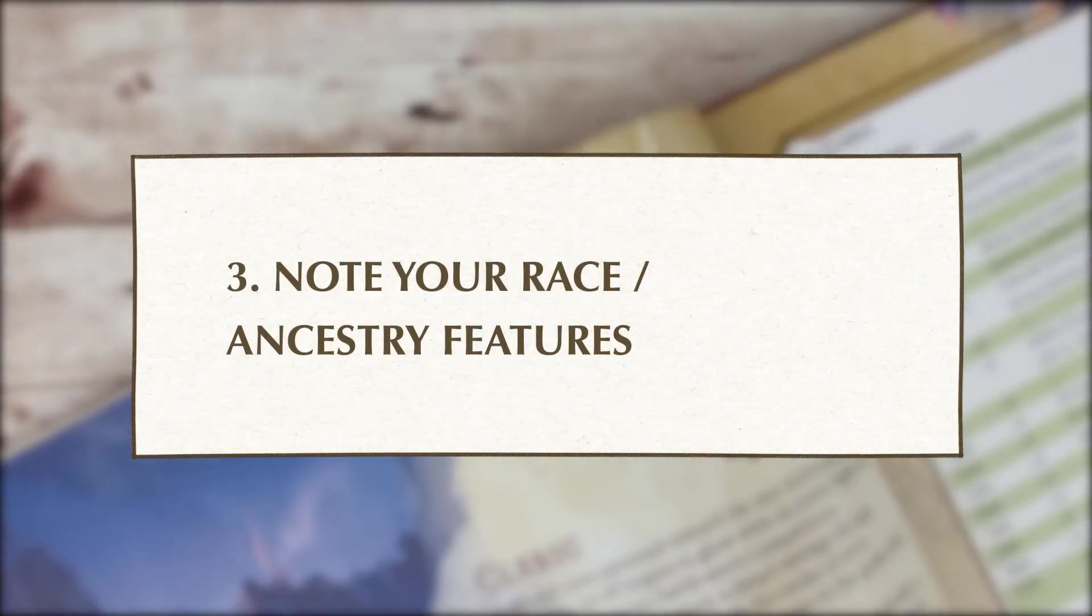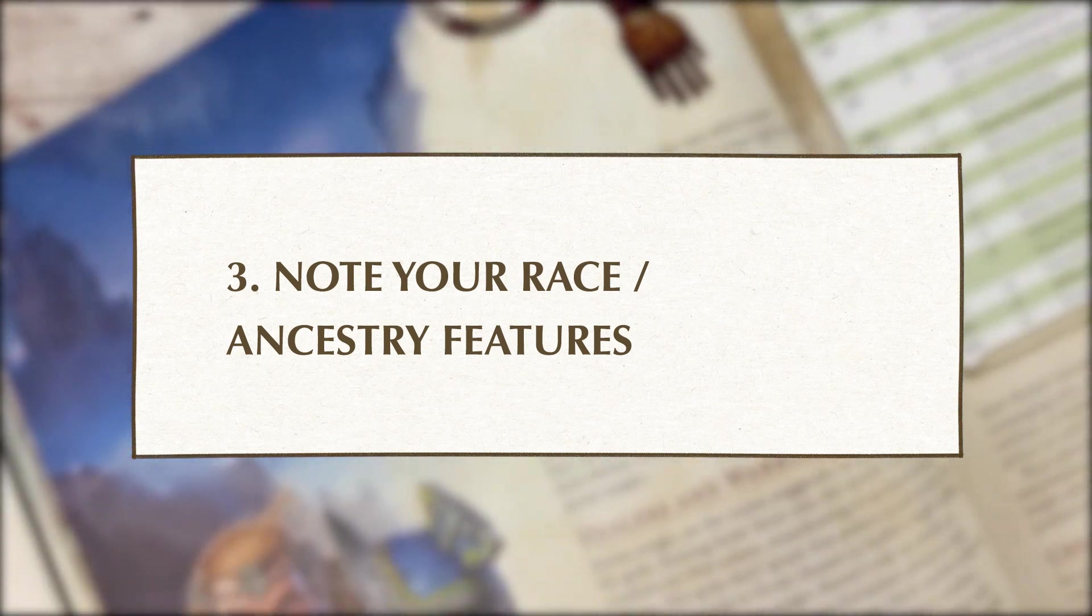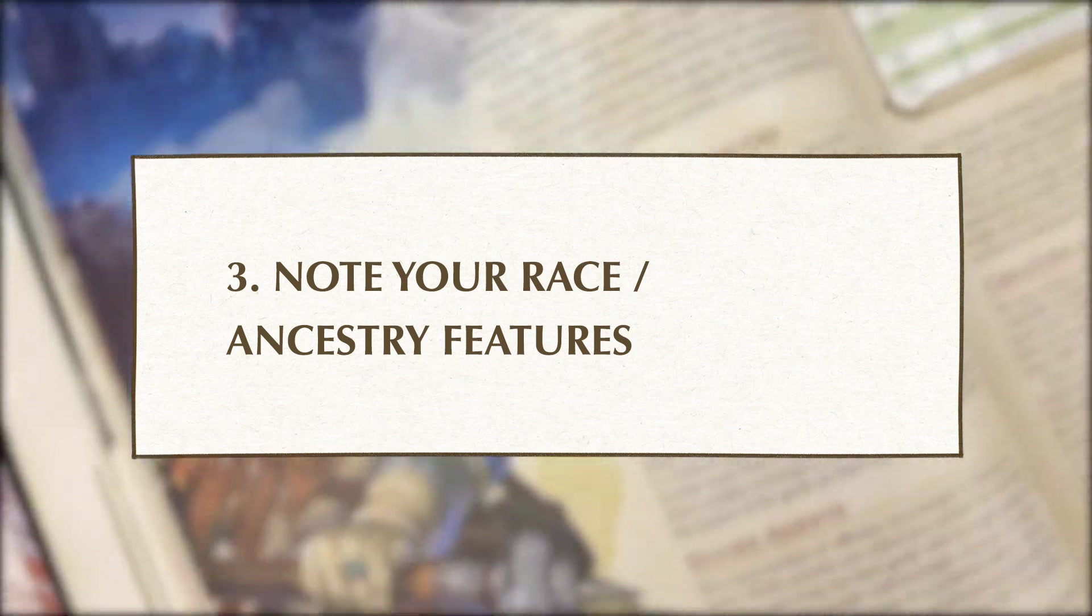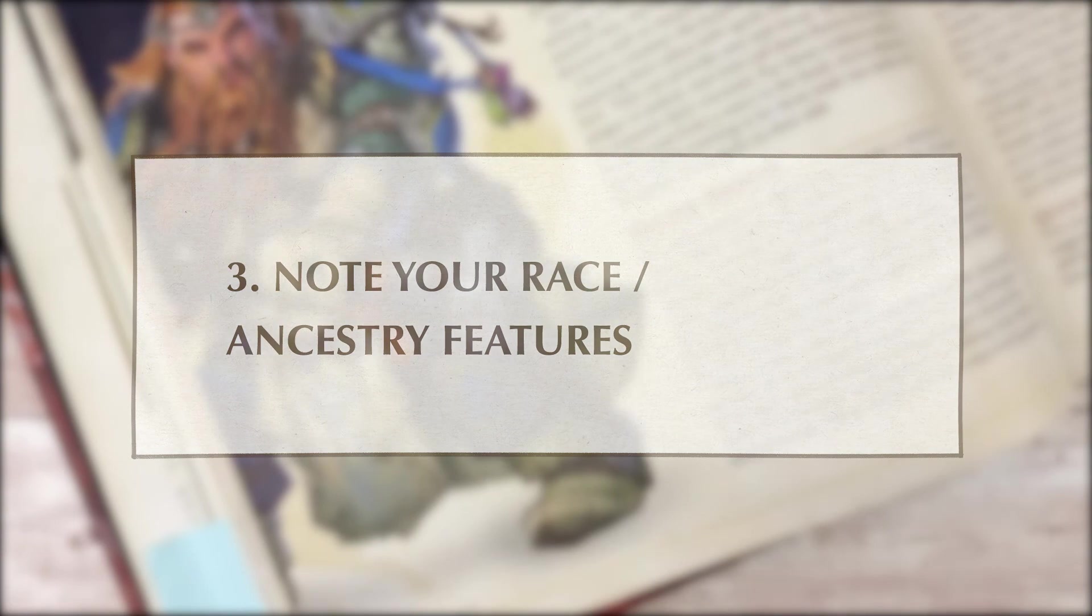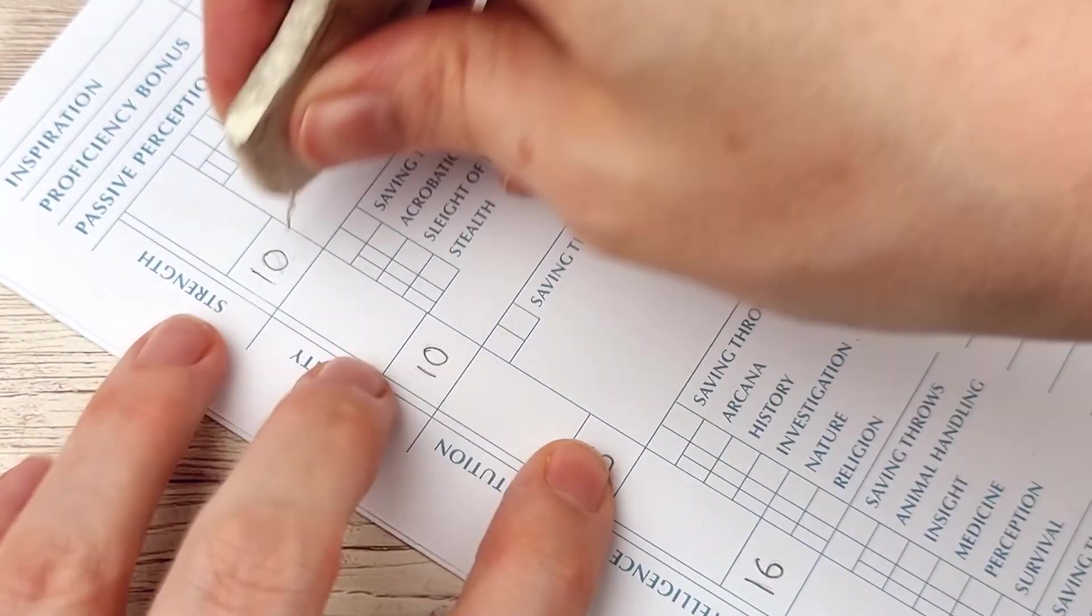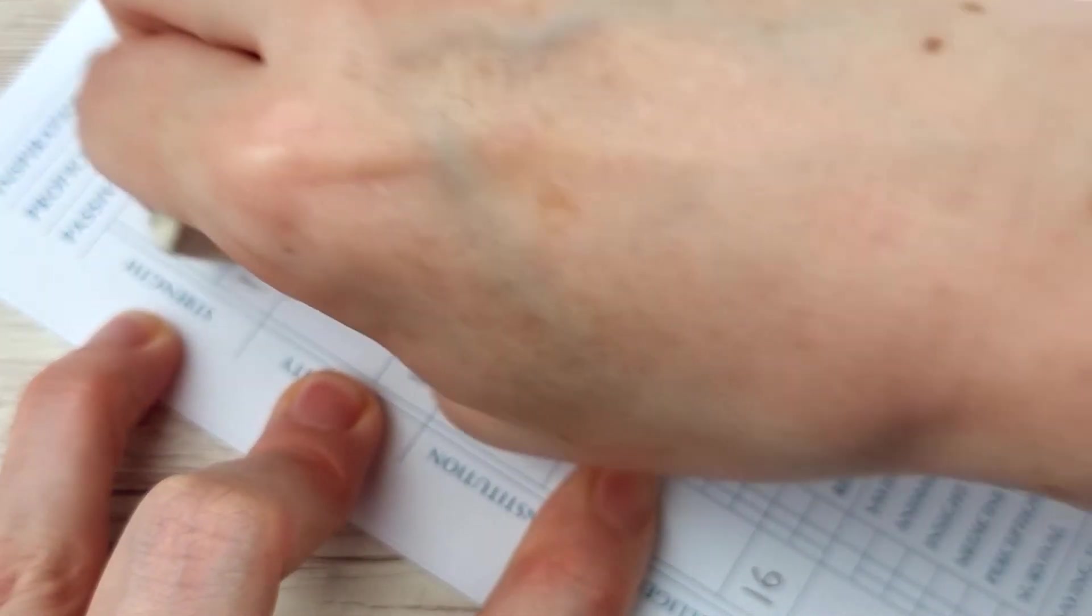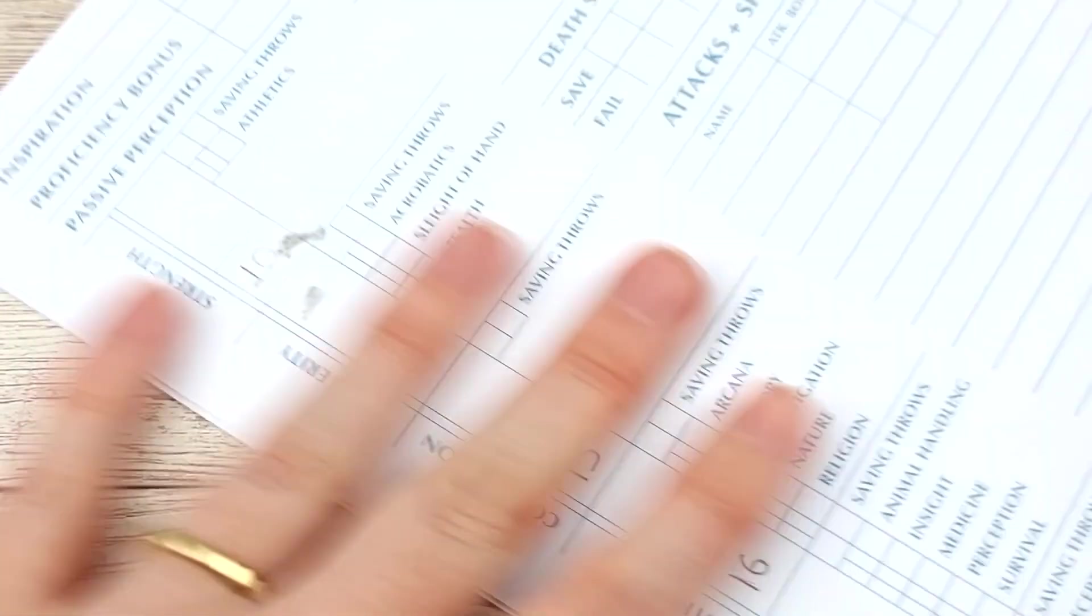Whether you've chosen a race or an ancestry and culture combination you should be able to find the following information related to this and you can now note that down on your sheet. We start with the ability score increase. One or two scores will increase based on your character's lineage so change these numbers accordingly.